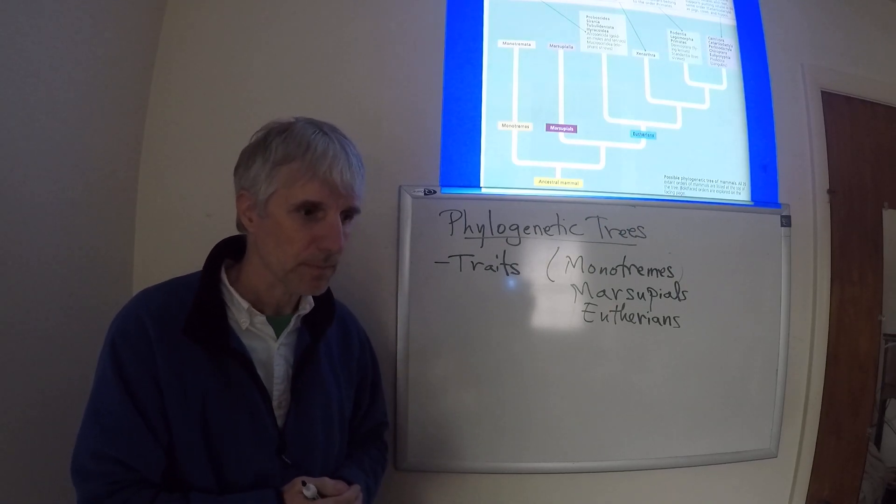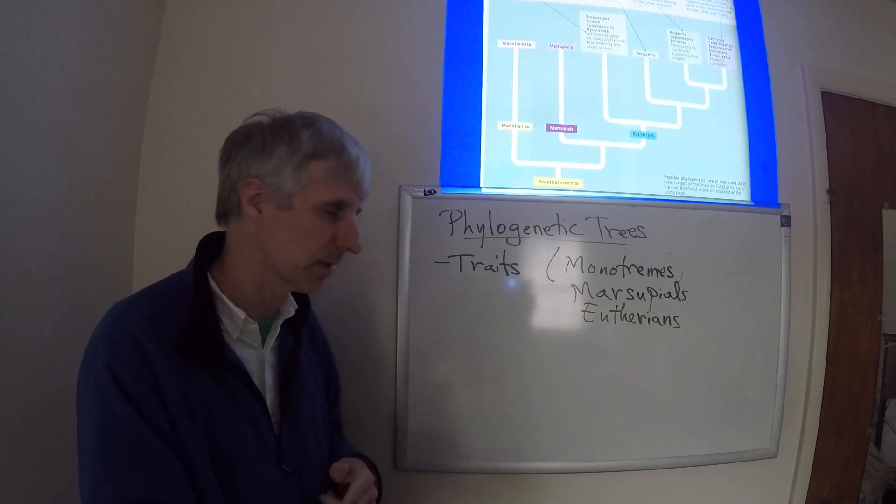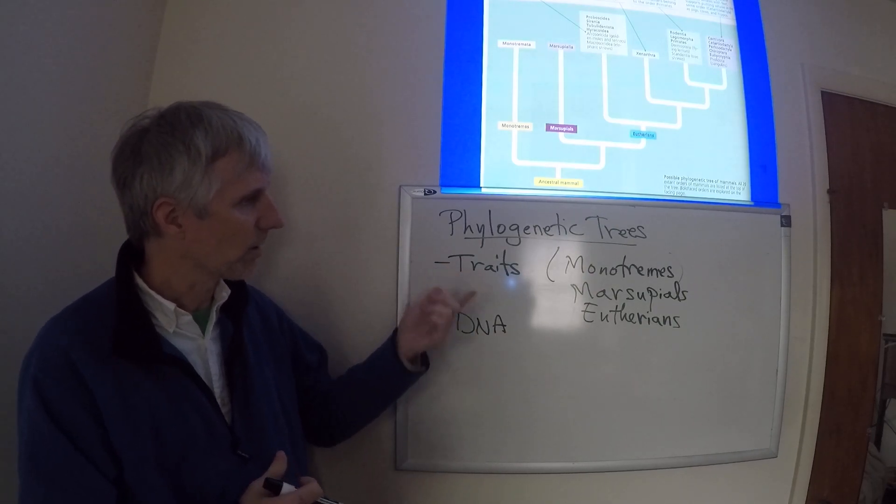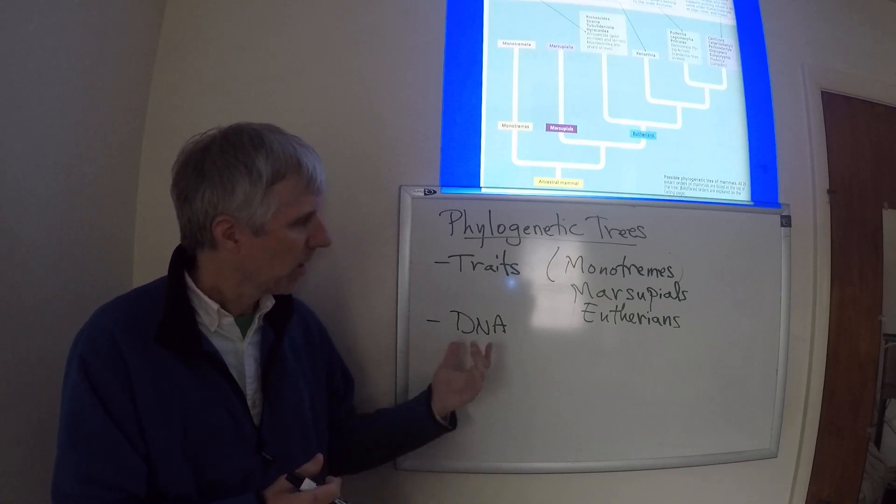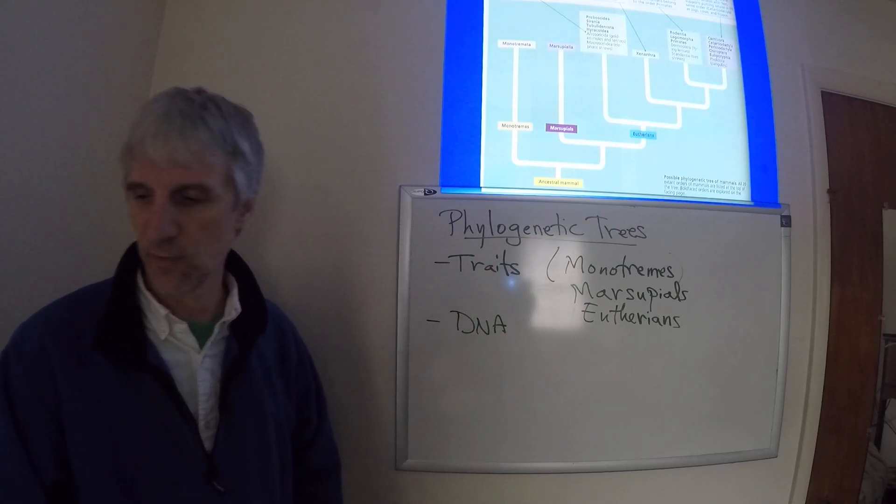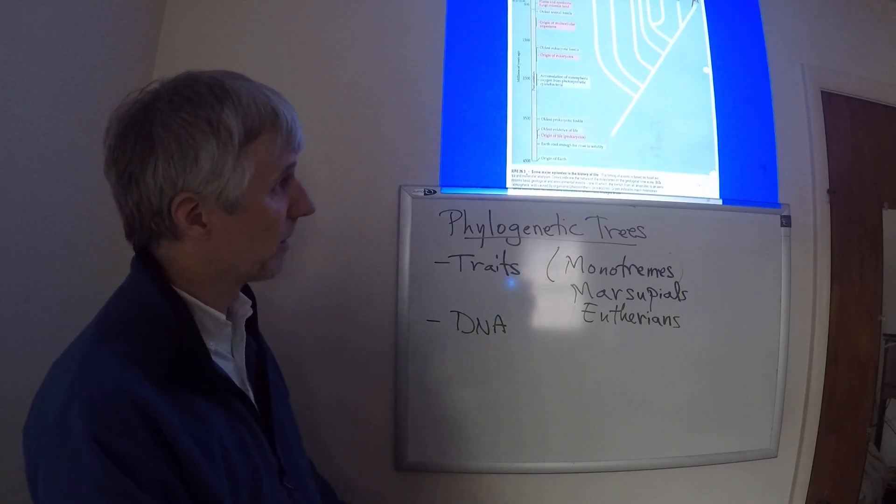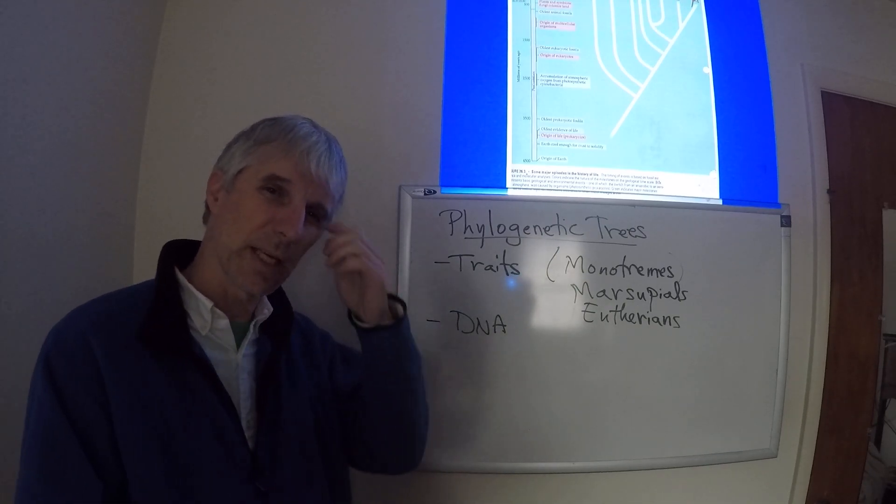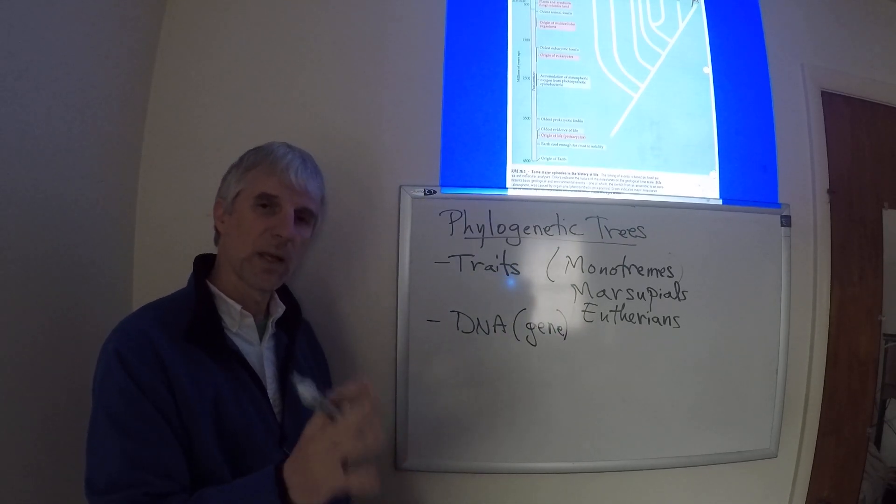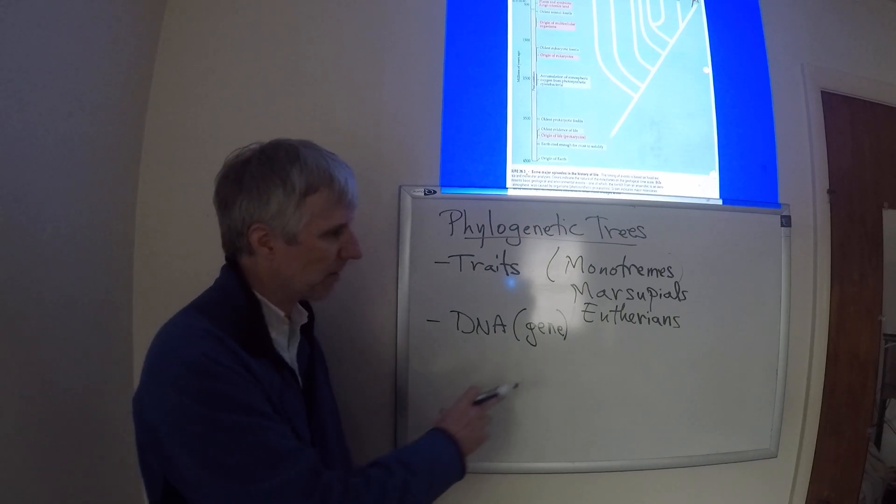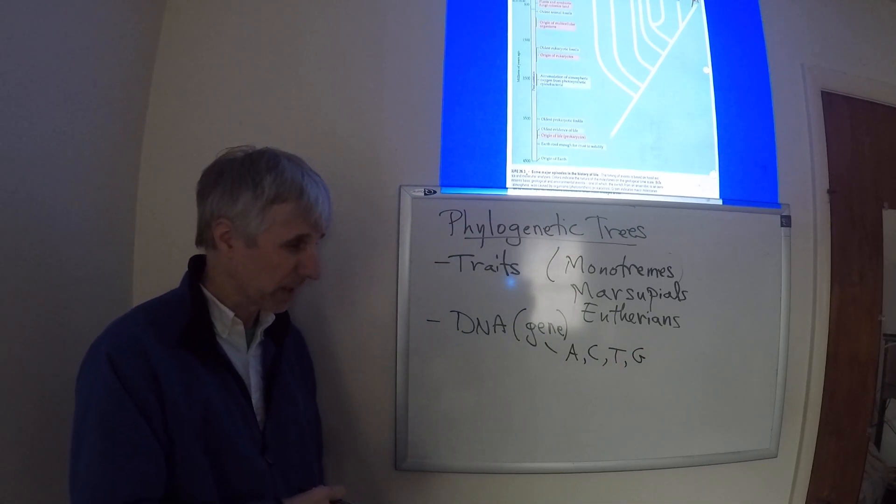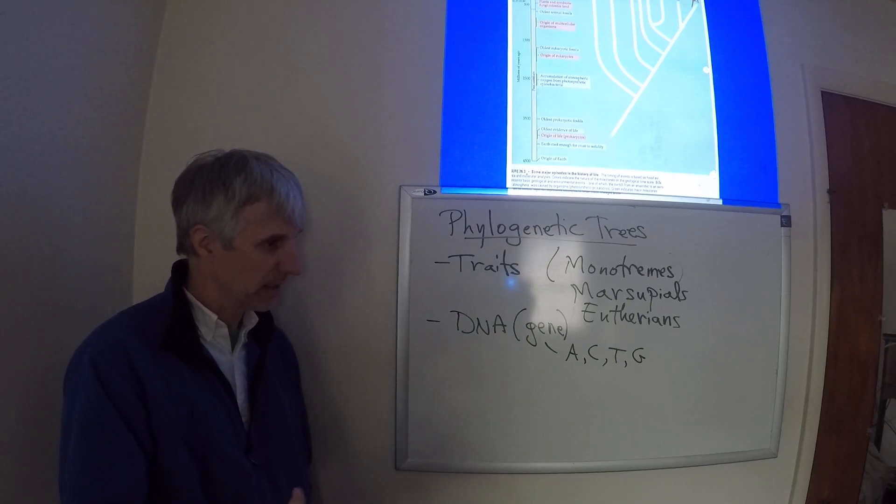Another approach that became much more common several decades ago was to use DNA molecules themselves. After all, traits derive from information within the DNA. Wouldn't it be better to use this very basic fundamental level rather than using something that's based on this fundamental level? So, what we could do is find a particular section of the DNA. Let's say we could identify a particular gene, and then what we'll do is we will look at the sequence of letters within this gene, right, adenine, cytosine, thymine, guanine, and use that as an indicator of relatedness.